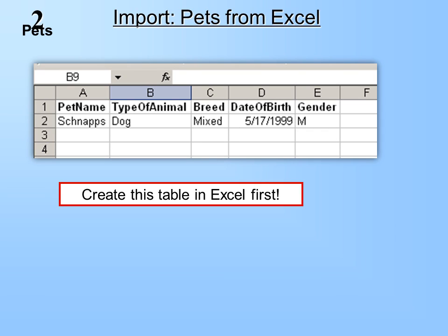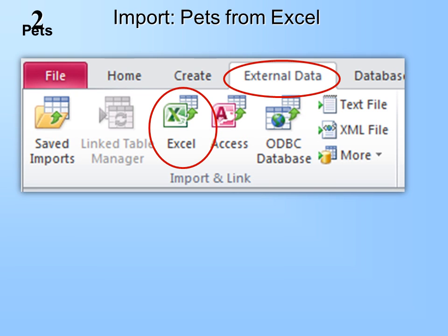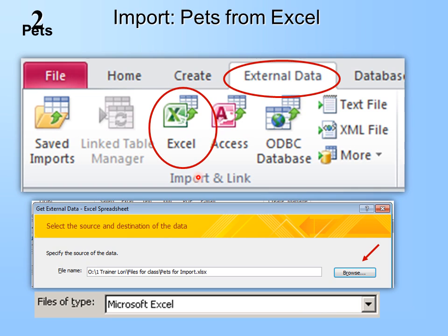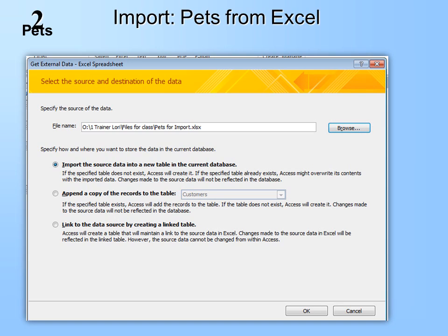Our second table we will import from Excel. This is what it looks like in Excel — it has field names and at least one row of data. The first row should contain headers, and the second should contain data that is complete — make sure there's something in every field. Then go to External Data and choose Import from Excel. Make sure Files of Type says Excel, and find your file. We'll call this import 'Pets.' When asked, we want to import it, so it will now be in Access with all the capabilities of Access.